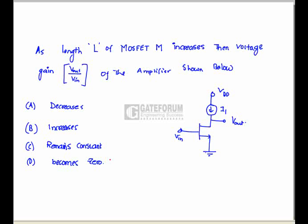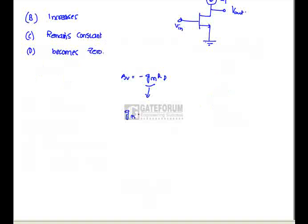Question is as length l of the MOSFET m increases then voltage gain of the amplifier shown below. We know that the voltage gain of an amplifier is minus gm r out. Here gm is transconductance which is decided completely by the q point dc values. We know that gm equals to 2 id divided by vgs minus vt. We know that here id equals to i1 which is a fixed biasing. So id equals to kn dash w by l vgs minus vt whole square.